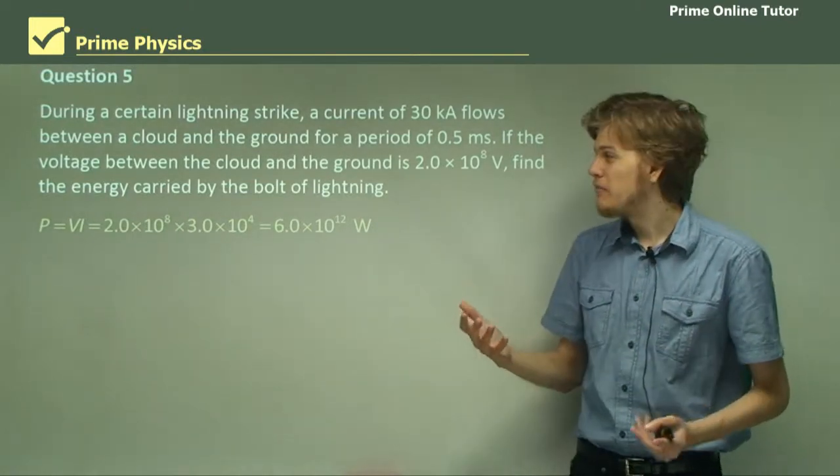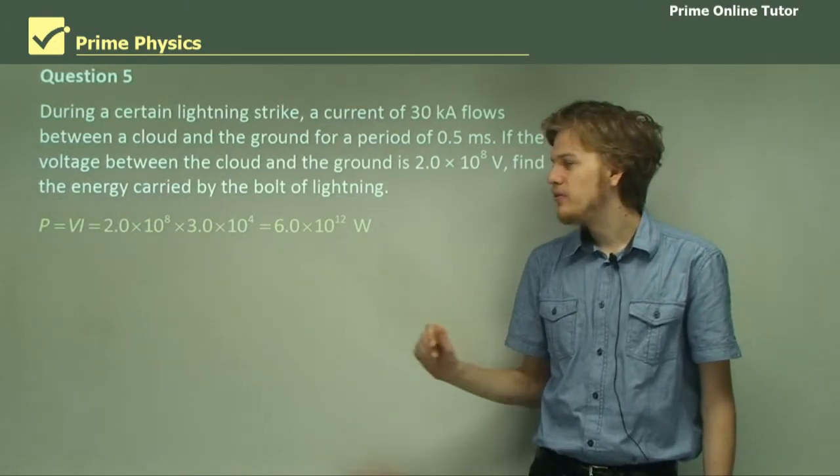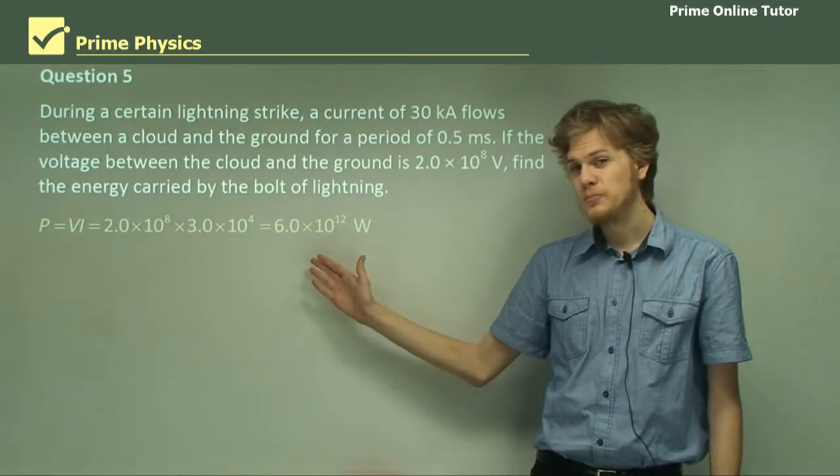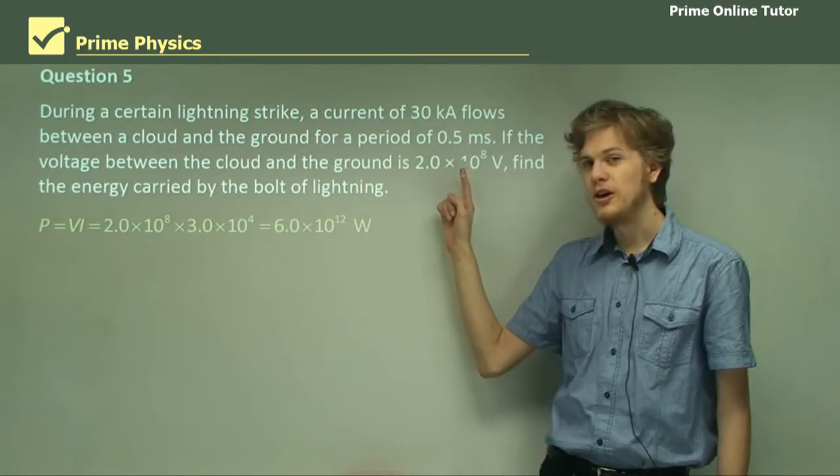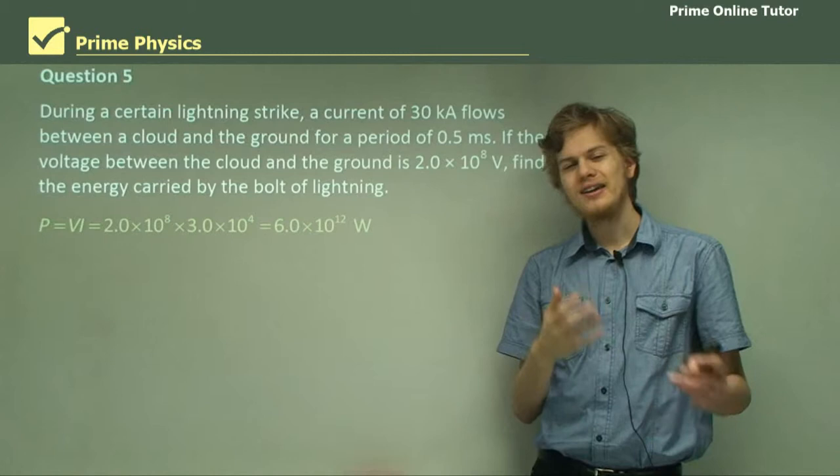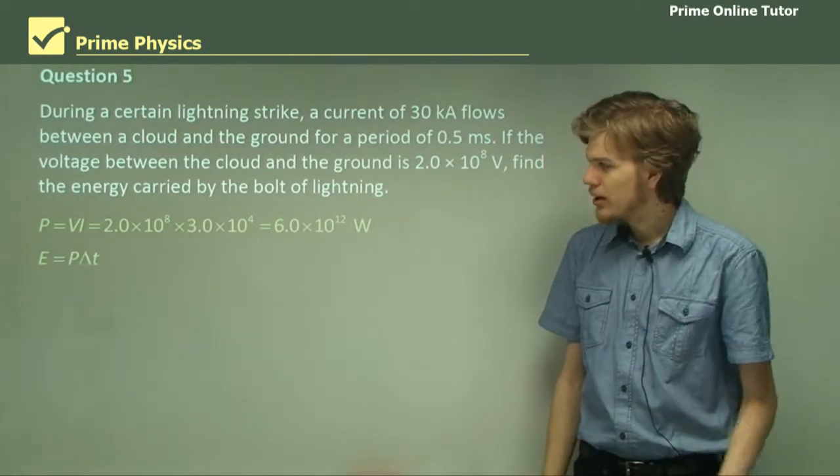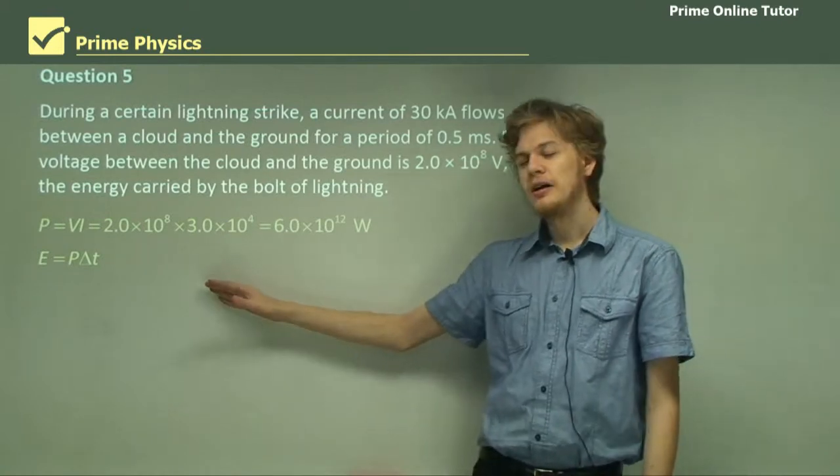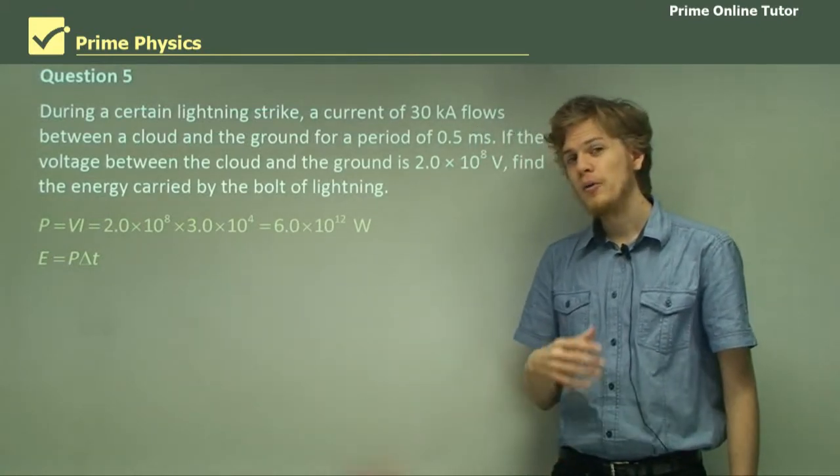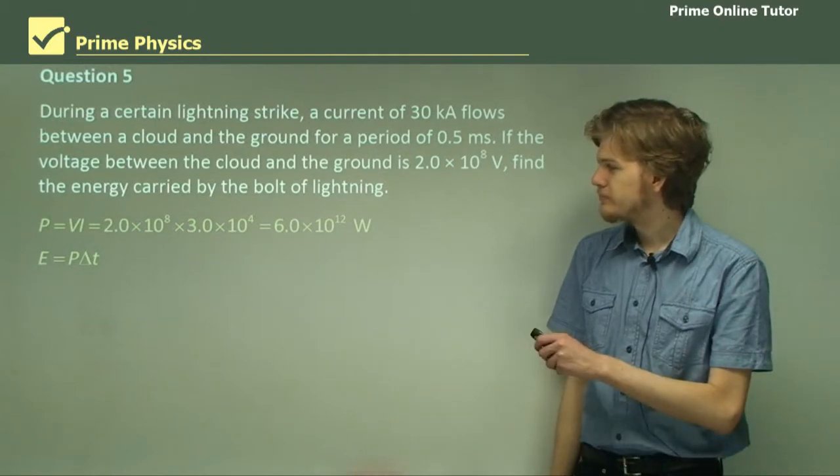Well, it's a bolt of lightning. We expect it to be powerful. But how much energy does it transmit if it has this much power over this much time? Can you remember the equation that relates energy to power? It's a pretty simple one. Energy equals power times time. Because power is the rate of flow of energy.